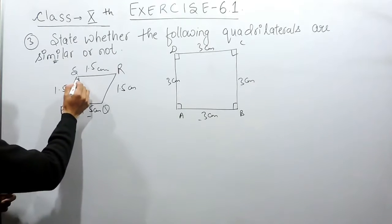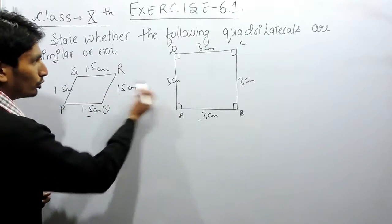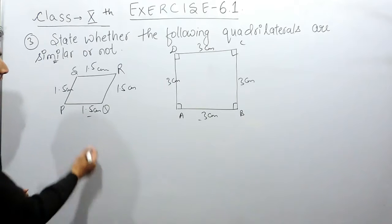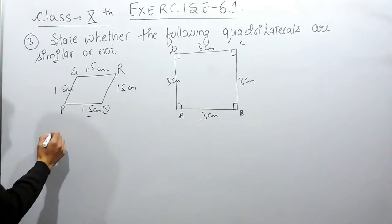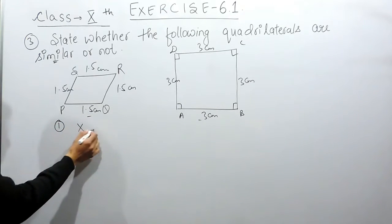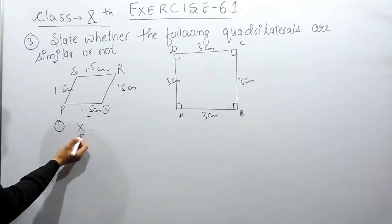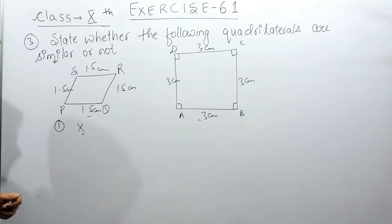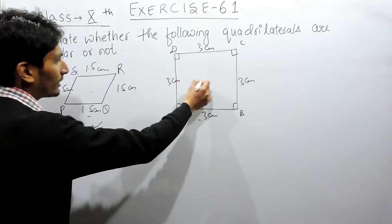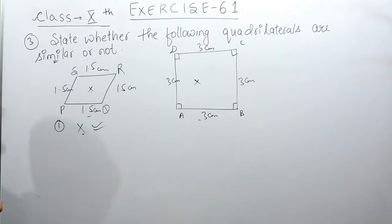Here, the angles of these two quadrilaterals are not the same. Because the first condition fails — we cannot prove the angles are equal — we conclude that these two are not similar figures.